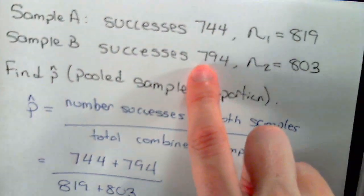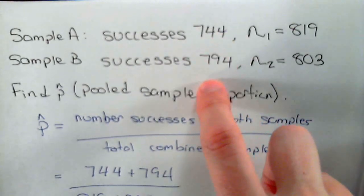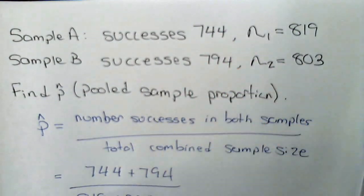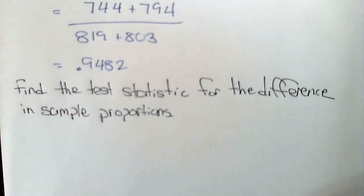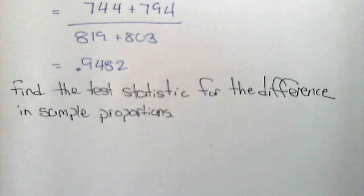Alright, in the last problem we had two different samples with different sample sizes and different number of successes, and we found the pooled sample proportion. We'd now like to find the test statistic for the difference in the sample proportions.